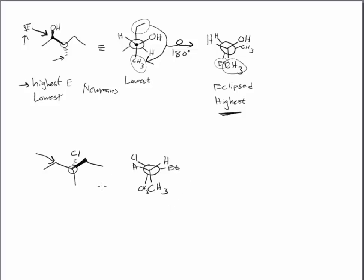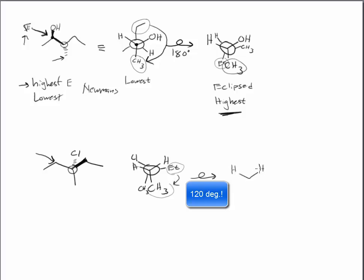To get to the highest energy, I need to take the largest groups — the ethyl and the methyl — and make sure that they are eclipsing. So I need to rotate this 60 degrees while still maintaining the eclipsed orientation. Basically, I'm going to put the ethyl where the methyl was, put the methyl where the chlorine was, and put the chlorine where the ethyl was. This is the highest energy conformation.